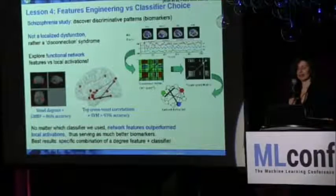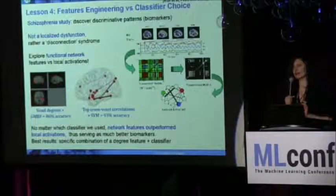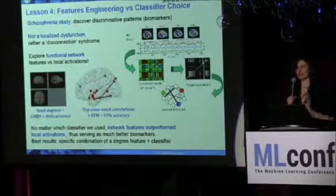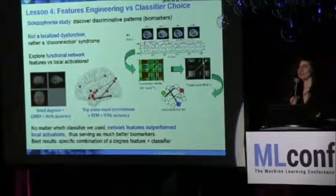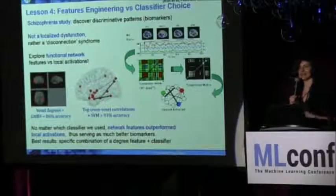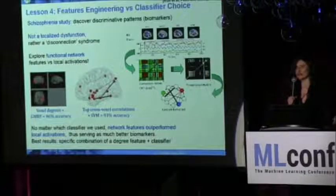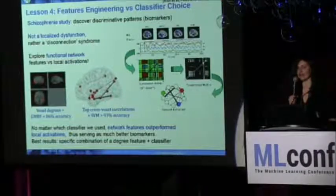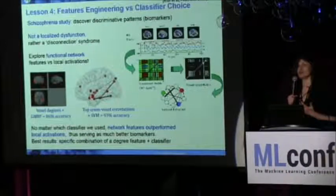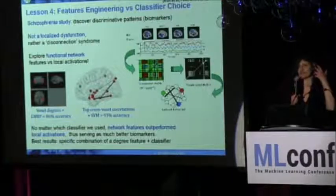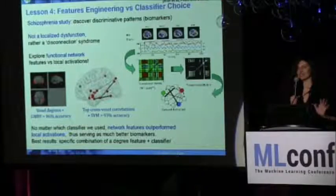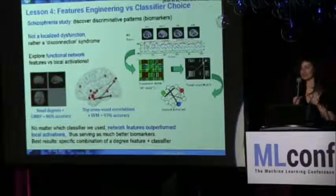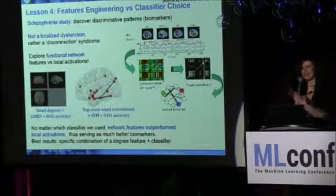Lesson four: sometimes it's much more important what type of features you design than what particular classifier you use. In this case we looked at schizophrenia data, and the goal was to figure out statistical biomarkers of the disease. We know it's not a local thing — it's a network disruption. So you start looking for network properties: build a correlation matrix of the brain, apply value threshold, look at the network degrees, shortest paths, and other features. Bottom line — no matter which classifier you try, those features were much more discriminative than local activation features typically used in the field. Use your prior and you get good results.